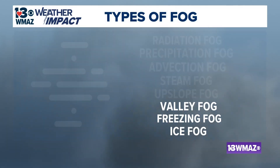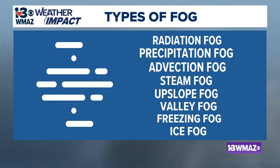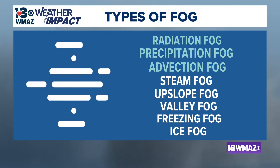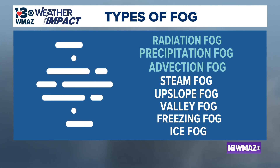There are actually several types of fog — eight to be specific — but here in central Georgia, we most commonly see three main types: radiation, precipitation, and advection fog.